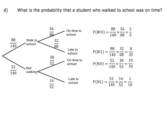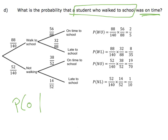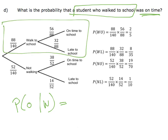What's the probability that a student who walked to school was on time? This is a conditional probability — I know they walked to school, I've seen them walking. So I'm only interested in the walking branch. From there, the chance of being on time is 56 out of 88, and that's the answer.